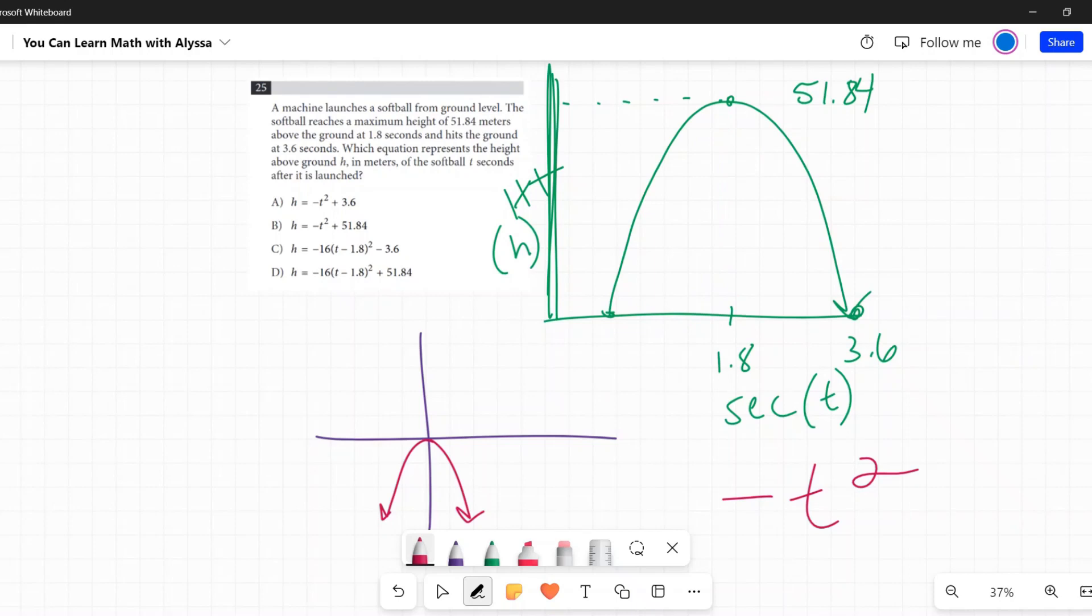Now we said what moves something left or right in a function? It's when you put a number in here with that t. So I'm going to put in with that t, it goes to the right 1.8.